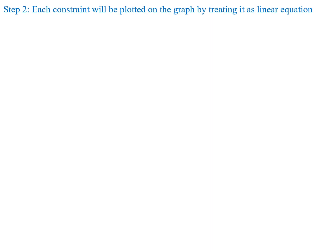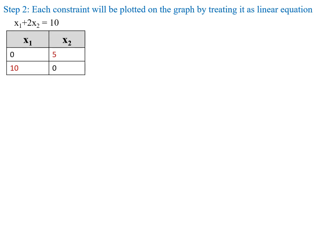The second step is to plot each constraint on the graph by treating it as a linear equation. First we determine the coordinates for all the constraint equations. For the first constraint equation x1 plus 2x2 equal to 10: if x1 equal to 0 then 2x2 equal to 10, so x2 equal to 5. Similarly, substituting x2 equal to 0 gives x1 equal to 10. So the coordinates for the first constraint equation are (10, 5).